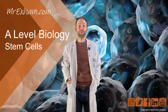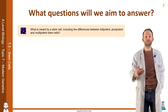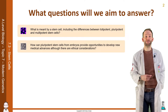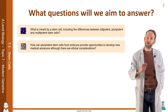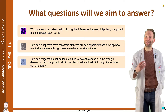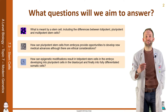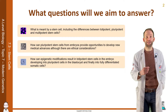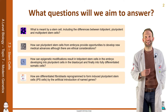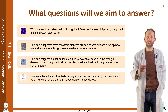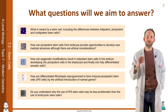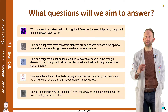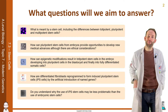This video is all about stem cells: what is meant by a stem cell, including the differences between totipotent, pluripotent, and multipotent stem cells. How pluripotent stem cells from embryos provide opportunities for new medical advances, though there are ethical considerations. How epigenetic modifications result in totipotent stem cells developing into pluripotent cells, and finally into fully differentiated somatic cells. How differentiated fibroblasts are reprogrammed to form induced pluripotent stem cells by the artificial introduction of named genes, and why induced pluripotent stem cells may be less problematic than embryonic stem cells.